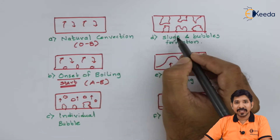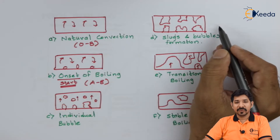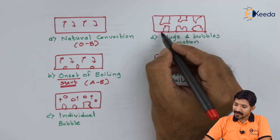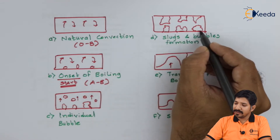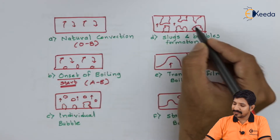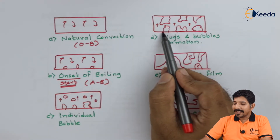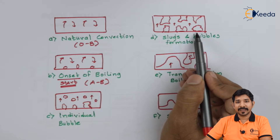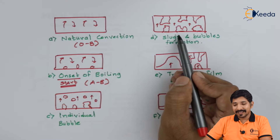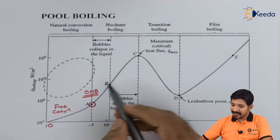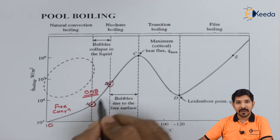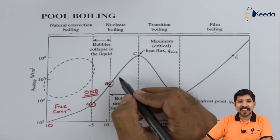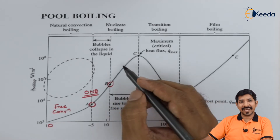Next is slug and bubble formation. Slugs are nothing but the combination of many bubbles — they can be called bigger bubbles. In this region, a lot of area is vacated due to the slug bubbles that form and move upward. These small areas created by the slugs allow for heat transfer, and because of this, the heat transfer rate may get enhanced. From A to B is onset of nucleate boiling, then B to C is actual nucleate boiling where bubbles form, accumulate into slugs, and move upward.